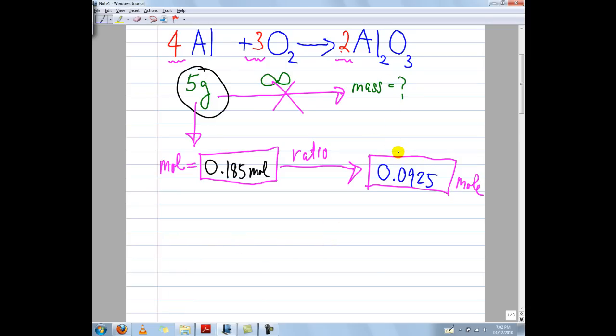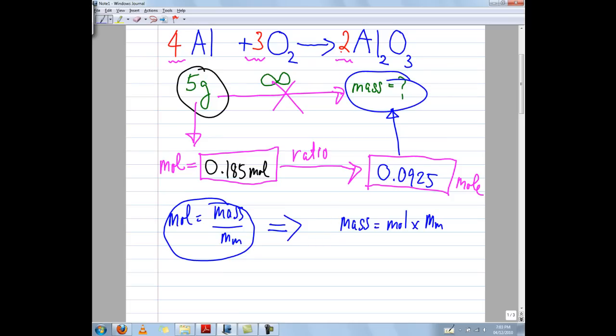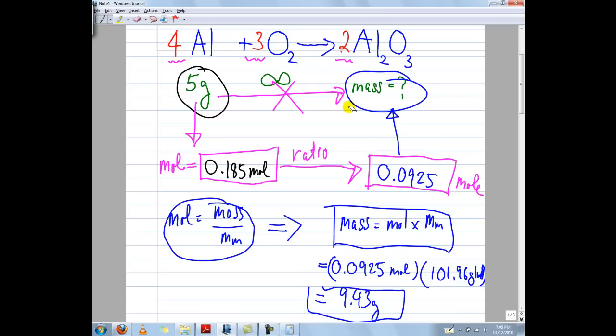Now it's just a matter of converting from the moles back into a mass. For this we rearrange the original equation, moles equal to mass over molar mass, and algebraically rearranged so that mass is equal to moles times molar mass. So that's 0.0925 moles times the molar mass of aluminum oxide, which is 101.96 grams per mole, and that equals to 9.43 grams. So we'll erase this and replace it with 9.43 grams. And we are done.